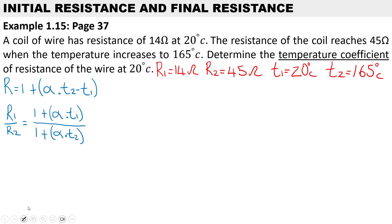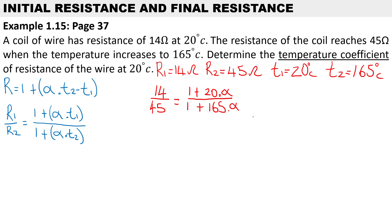Let's substitute those values. R1 is 14 ohms and R2 is 45 ohms. On the right-hand side we have 1 plus 20 degrees times the temperature coefficient, over 1 plus 165 degrees times the temperature coefficient. So 14 divided by 45 gives us 0.311. Let's rewrite the right side: 1 plus the initial temperature times the temperature coefficient, over 1 plus 165 times the temperature coefficient.